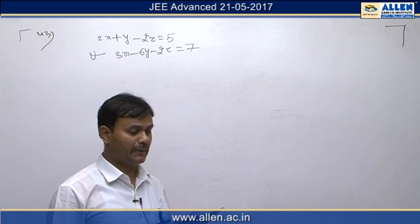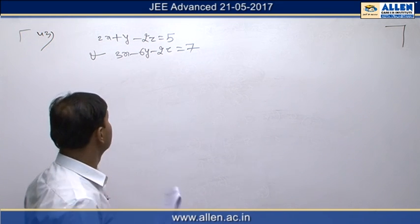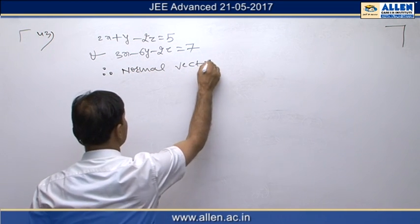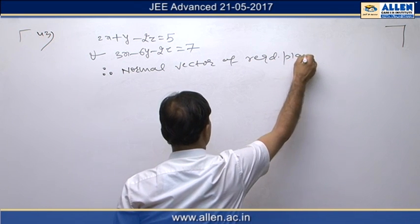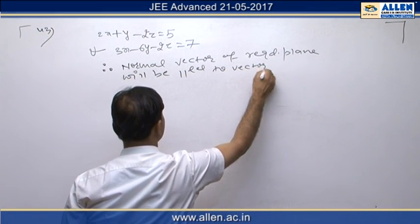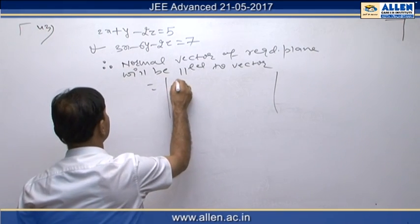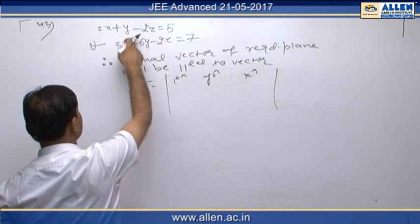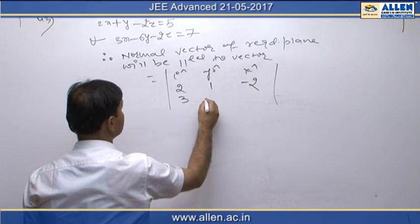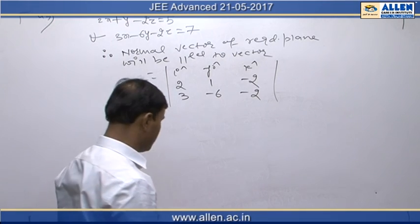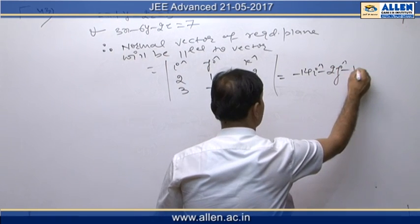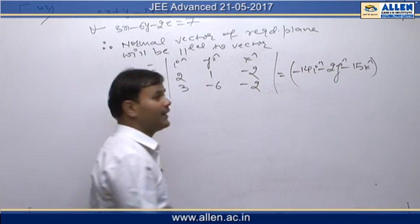Since the required plane is perpendicular to the two given planes, the normal vector of our required plane is parallel to the cross product given by the determinant with i-cap, j-cap, k-cap in the first row, the normal vector of the first plane in the second row, and the normal vector of the second plane in the third row. Solving this determinant gives -14i-cap - 2j-cap - 15k-cap, which is the normal vector of the required plane.